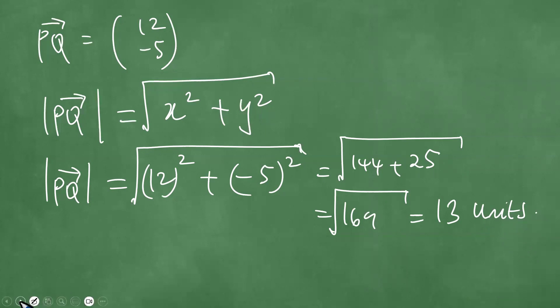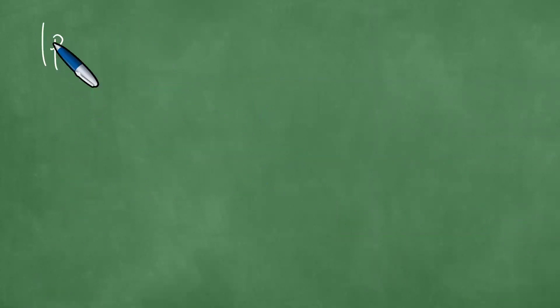The implication then is therefore that the vector PQ is actually 13 units as required. So this obviously ends up as being the answer.